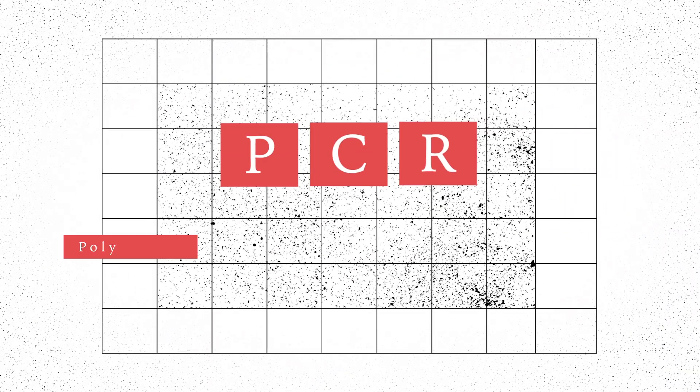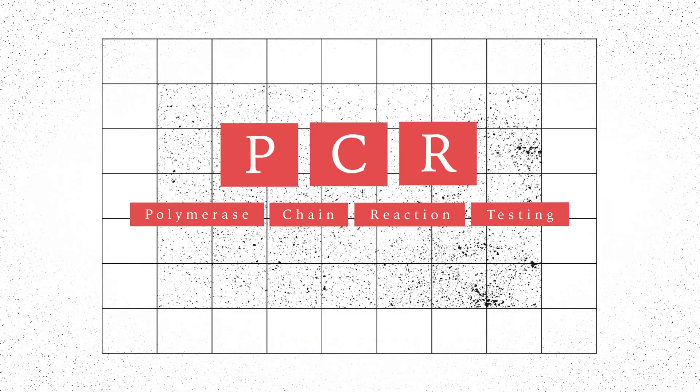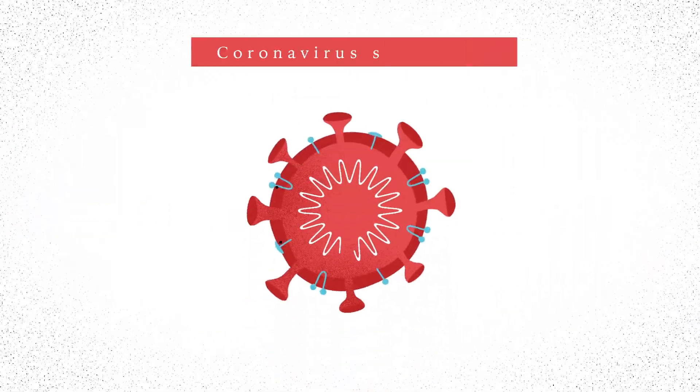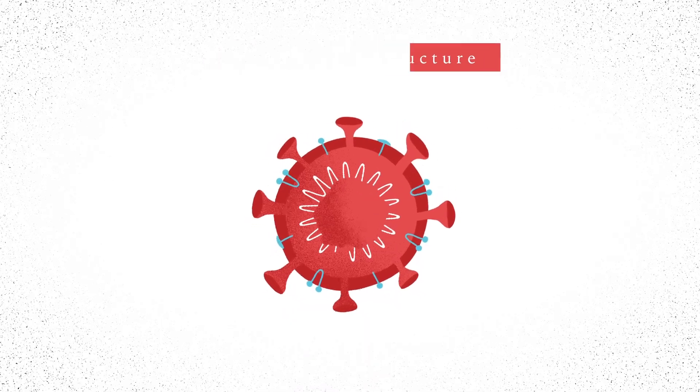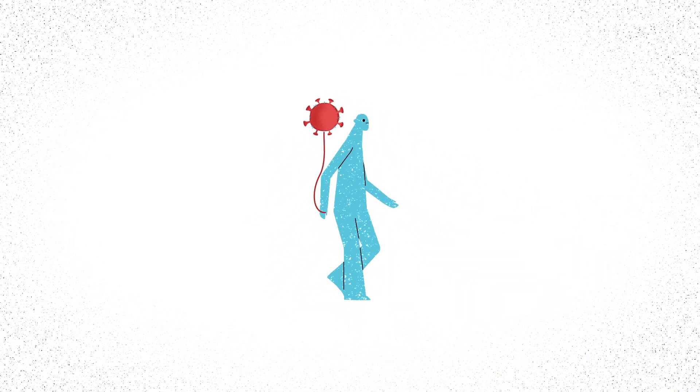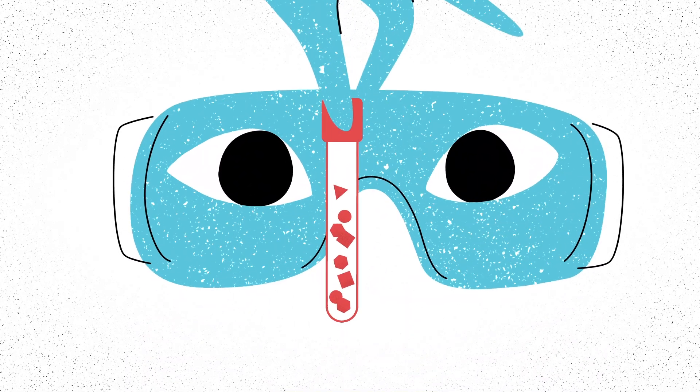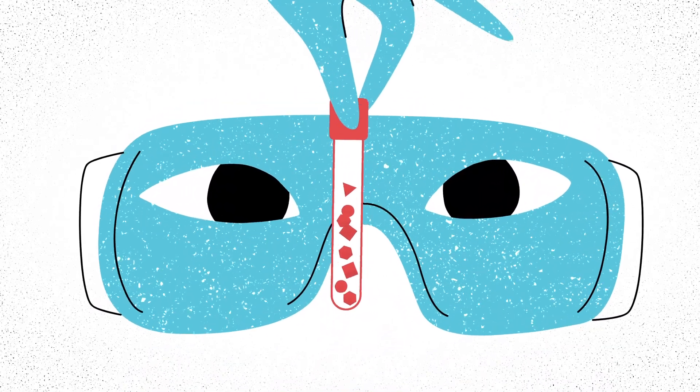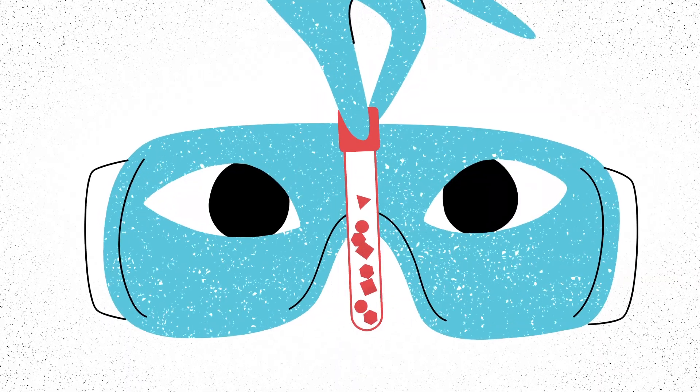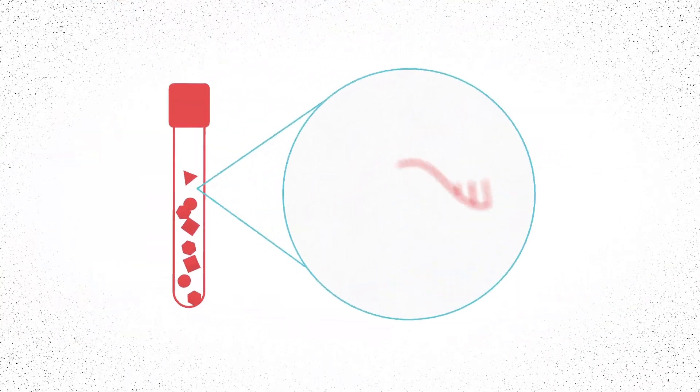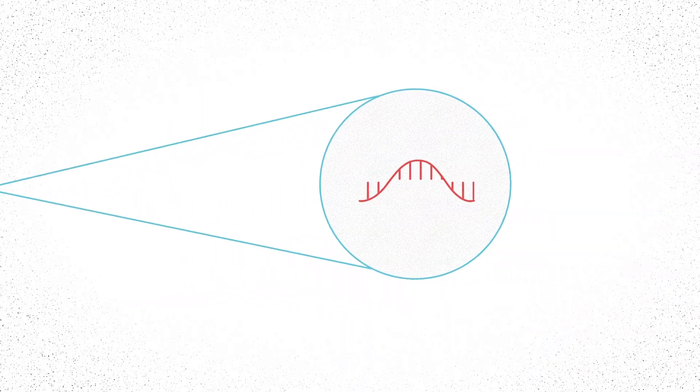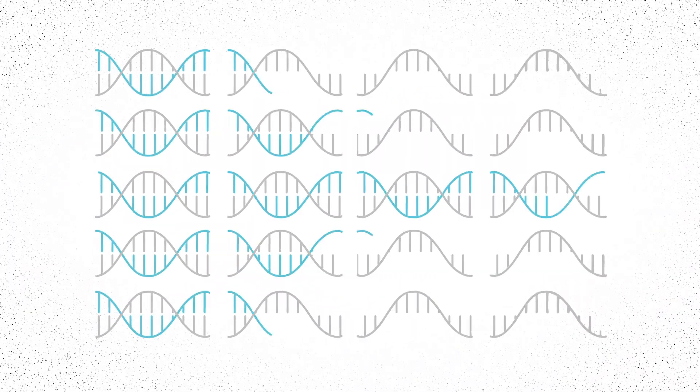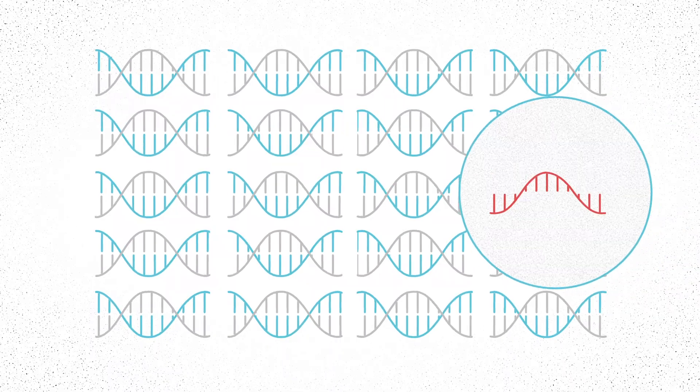PCR, or polymerase chain reaction testing, targets the virus's genetic material in the body and is used to diagnose someone who is currently infected. Yet this genetic material may be present in such imperceptible amounts that actually detecting it is difficult. This is where PCR comes in. It's widely used to amplify genetic information to large enough quantities that it can be readily observed.